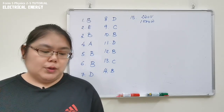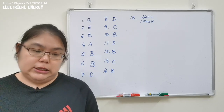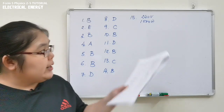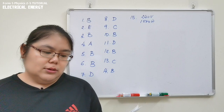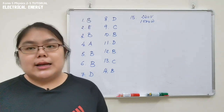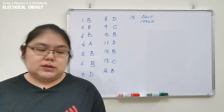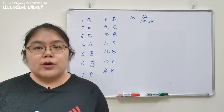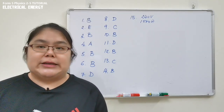Question 15 shows a diagram of an immersion heater with a specification of 240 volts and 1000 watts. The question asks for a suitable material for the heating element. For a heating element, we need high resistance, so we use nichrome — a poor conductor with high resistance.